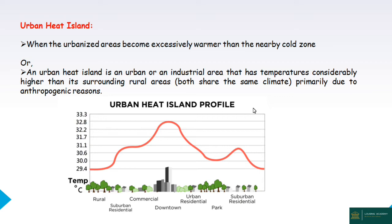From a climatology perspective, the urban heat island is an urban or industrial area such that the temperature is considerably higher or warmer than the surrounding rural areas. This is an anthropogenic region — because of human activity, it's not a natural phenomenon, it's an artificial phenomenon. In the diagram, rural areas show 29.4°C while urban areas show 32.8°C — more than 3 degrees Celsius of difference.